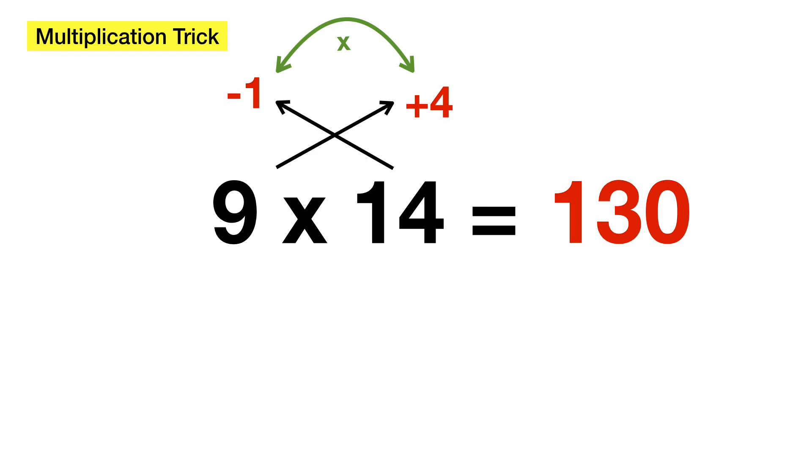So, what we actually have to do now is subtract 4 from 130. So, 130 minus 4 is 126, and that is the answer.